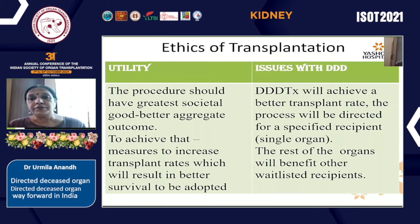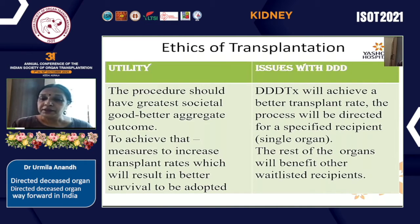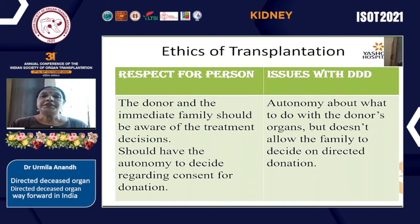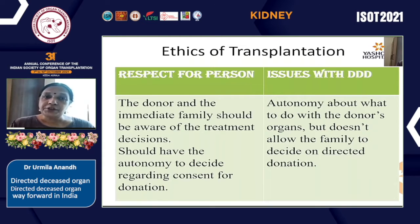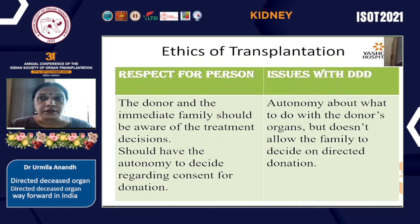The process should only be directed for a specific recipient and only for a single organ, so the program benefits from the rest of the organs, which will be given to recipients on the wait list. The principle of respect for a person suggests that the donor and immediate family should be aware of treatment decisions and should have the autonomy to decide regarding consent for donation — but this autonomy does not allow the family to decide on directed donation.